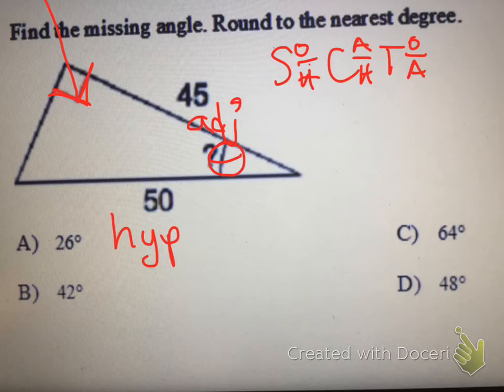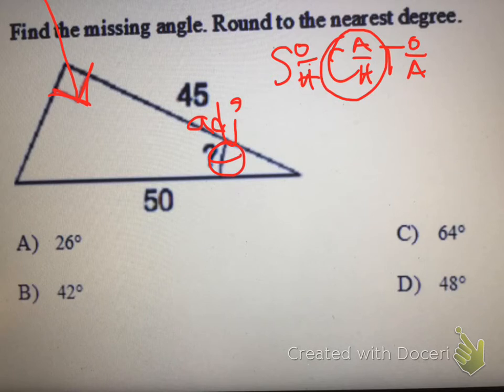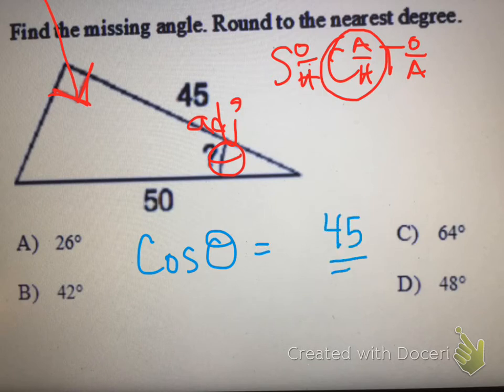So we're going to use cosine, which is adjacent over hypotenuse. So we'll set up our equation. The cosine of theta equals adjacent over hypotenuse, so that's going to be 45 over 50.